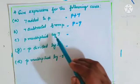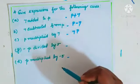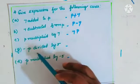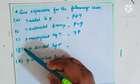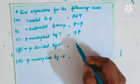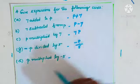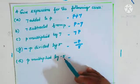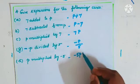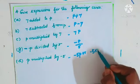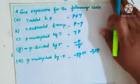'p divided by 5' — p by 5, or minus p by 5. 'p multiplied by minus 5' — minus 5p or minus 5 into p. This is the way you give your expressions.